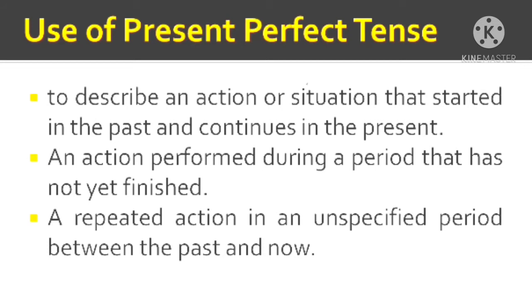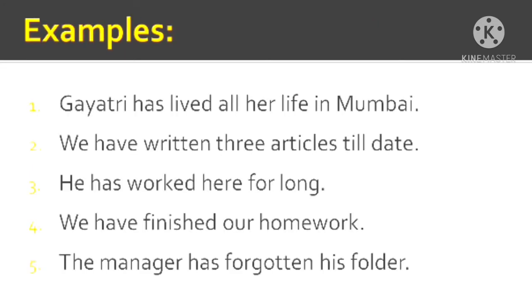We use the present perfect tense while talking about an action performed during a period that has not yet finished — it started in the past and continued up till now. We also use present perfect tense for describing a repeated action in an unspecified period between the past and present. Let us try to understand with the help of a few examples.